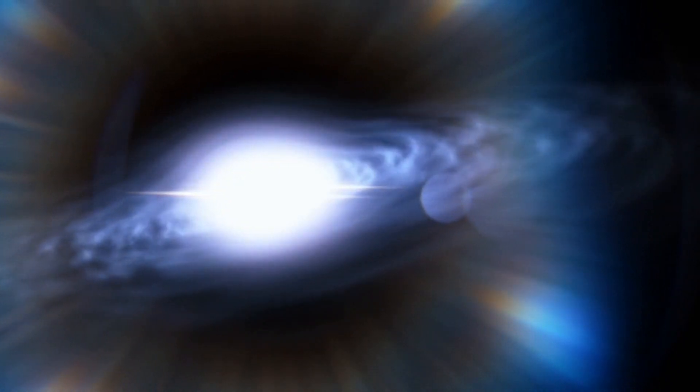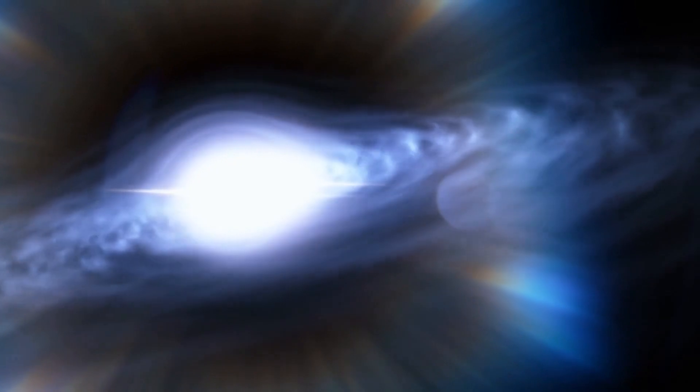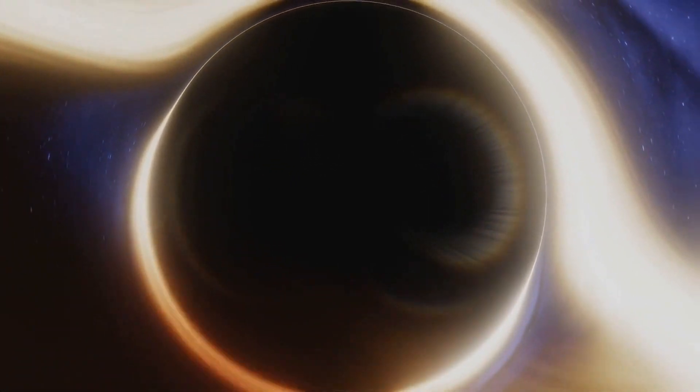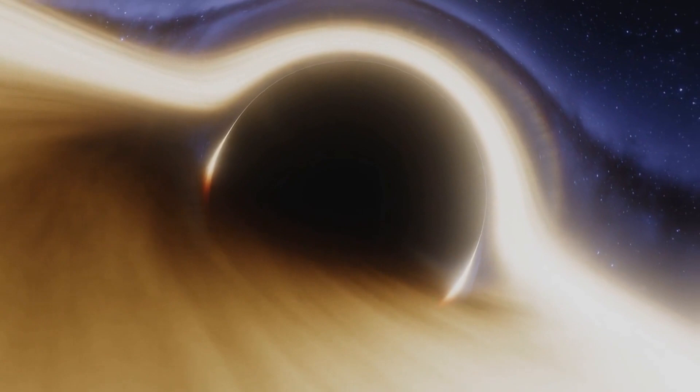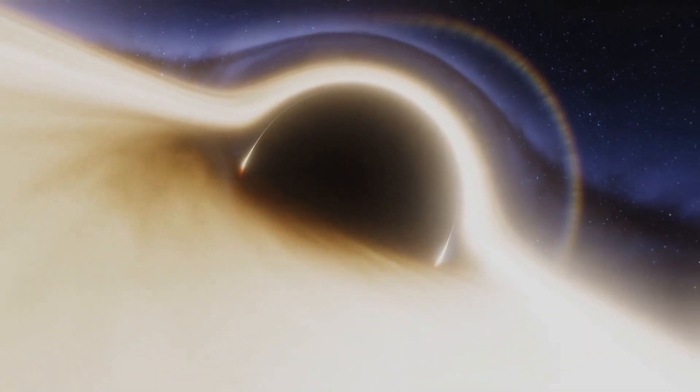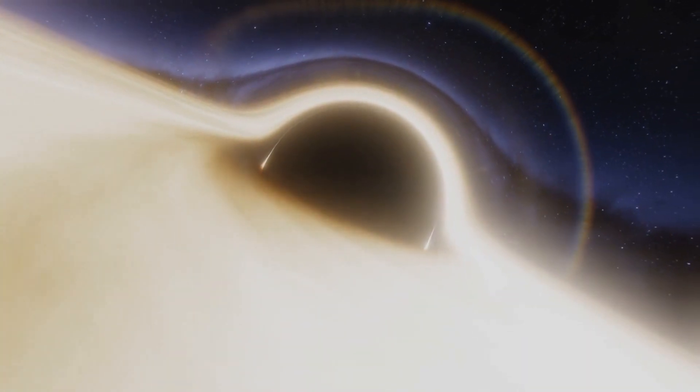According to the holographic principle, the information that falls into the black hole is not lost but is stored on the event horizon in the form of a hologram. This hologram contains all the information about the object that fell into the black hole, including its mass, energy, and other properties.